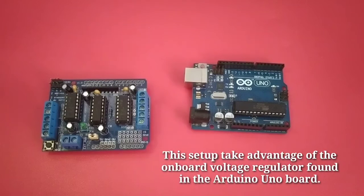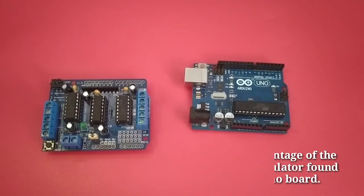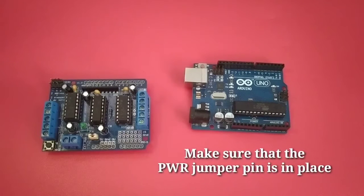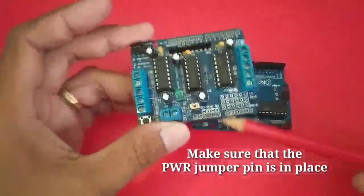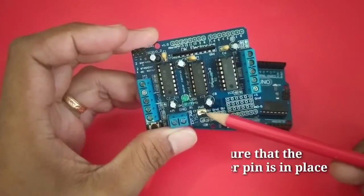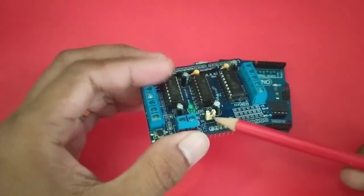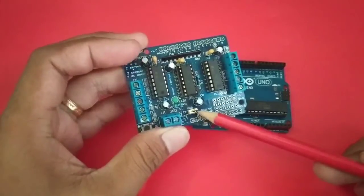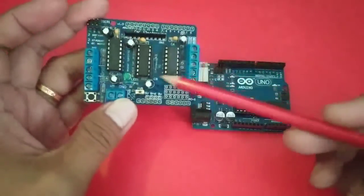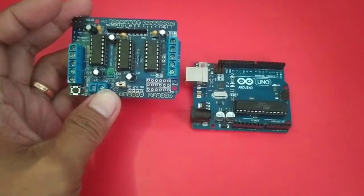With this setup, a single power supply, take advantage of the onboard voltage regulator, which is found in the Arduino Uno board. We need to make sure that the PWR jumper pin is in place. This is the PWR jumper pin. This is necessary during a single power supply for both the Arduino and the motor driver shield.